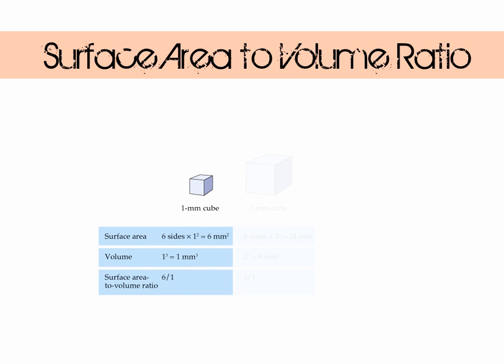Let's increase the size of the cube to 2 millimetres. Surface area is now 24 millimetres squared. Volume is 8 millimetres cubed. The size of the cube has doubled; the surface area has got 4 times bigger, but the volume is 8 times bigger. The surface area to volume ratio of this cube is 3 to 1.